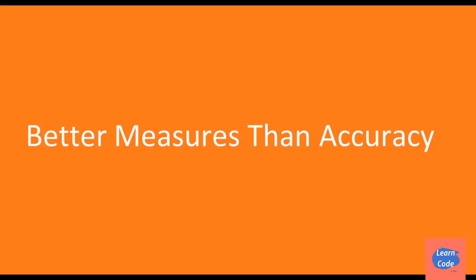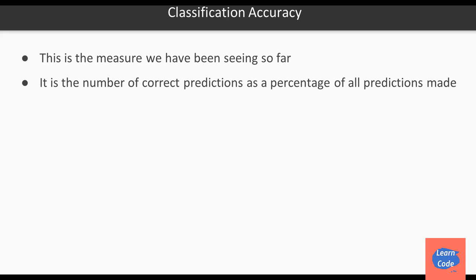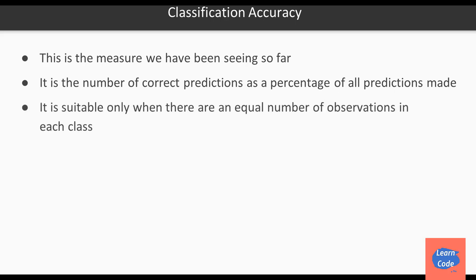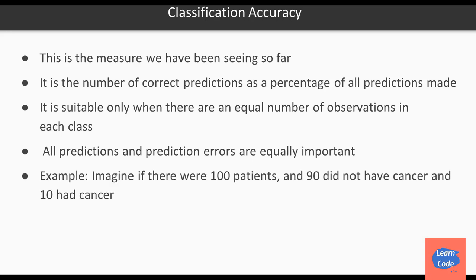In this video on better measures than accuracy, we look at classification metrics and regression metrics — ways to quantify how good or bad our models are performing. Classification accuracy — the number of correct predictions as a percentage of all predictions — is suitable only when there are equal observations in each class and all prediction errors are equally important. For example, if 100 patients existed and 90 did not have cancer, predicting none have cancer gives 90% accuracy but incorrectly classifies the 10 who do. Another metric is the confusion matrix.